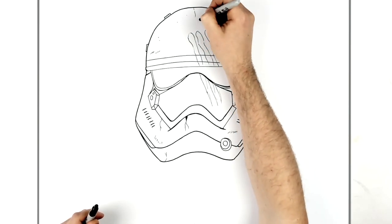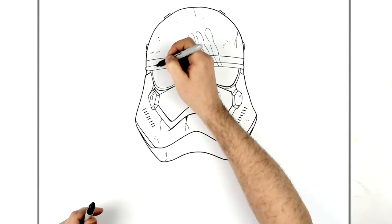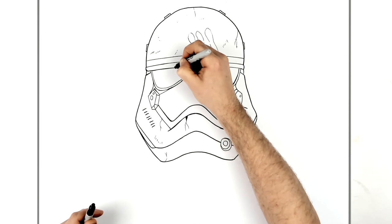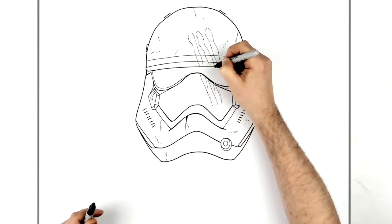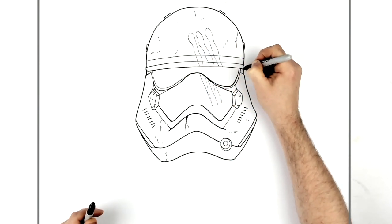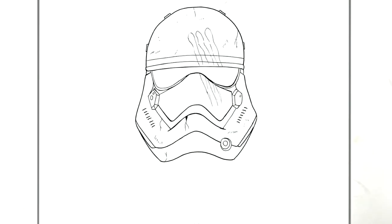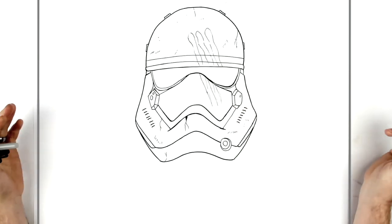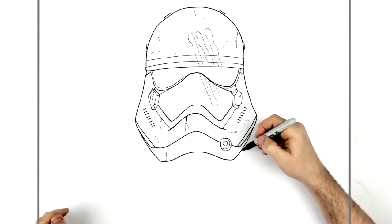It's all like a sort of battle-weary Stormtrooper. Those little details always make it better, I think. So if you wanted to just draw the helmet, you can leave it there. If not, we're going with the shoulders.